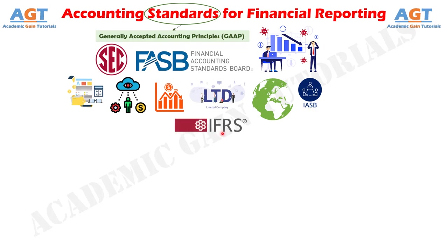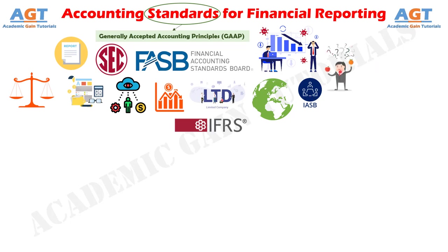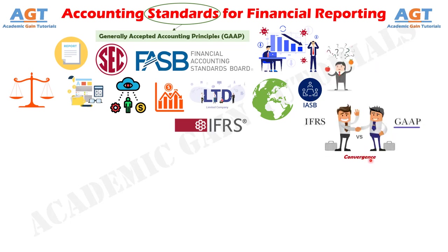These standards are called International Financial Reporting Standards, or IFRS. As markets become more global, it is often desirable to compare the results of companies from different countries that report using different accounting standards. In order to increase comparability, in recent years the two standard-setting bodies have made efforts to reduce the differences between U.S. GAAP and IFRS. This process is referred to as convergence.